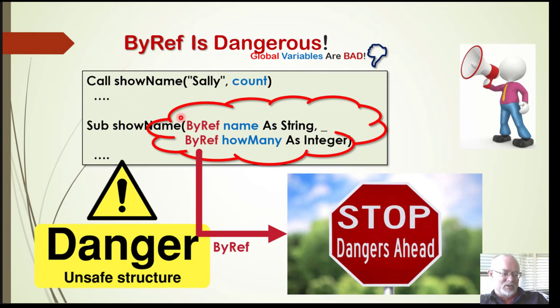Always use the specifier, either ByVal or ByRef. If you leave it off, if you don't specify either ByVal or ByRef, you get ByRef as a default. They changed this in VBA.NET, but in VBA it's reference by default and you want to avoid that. It's not a good idea, particularly for beginning programmers. It leads to subtle errors and difficulties.